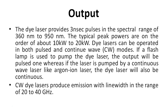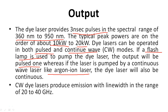Output: the dye laser provides 3 nanosecond pulses in the spectral range of 360 nm to 950 nm. The typical peak powers are on the order of 10 kW to 20 kW. Dye lasers can be operated in both pulsed mode, like in ruby laser, and continuous wave mode, like in helium laser. If a flash lamp is used to pump the dye laser, the output will be pulsed. If the laser is pumped by a continuous wave laser like an argon-ion laser, the dye laser will also be continuous. Continuous dye lasers produce emission with line width in the range of 20 to 40 GHz.